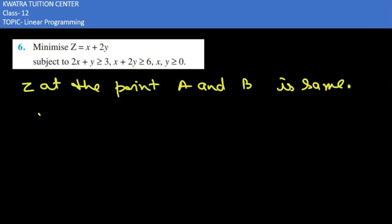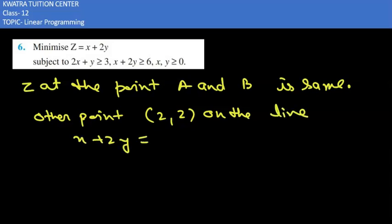So if we take any other point such as, just take as 2 comma 2 on line x plus 2y is equal to 6 then also we will get z is equal to 6. So thus the minimum value of z occurs for more than 2 points.